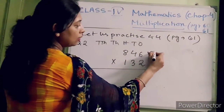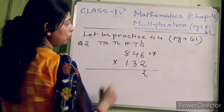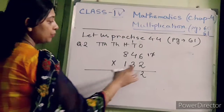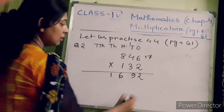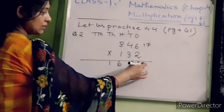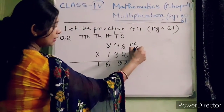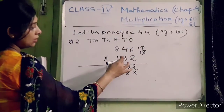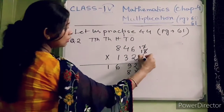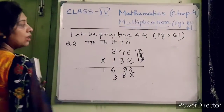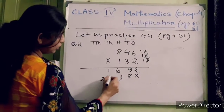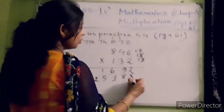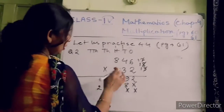Two into six is twelve — cut two and write here, put one on the tens place. Two into four is eight, eight plus one is nine. Two into eight is sixteen. Put a cross on ones. Now multiply this number with three. Three into six is eighteen — cut eight and write here, one on the tens place. Three into four is twelve, twelve plus one is thirteen — write three and one on the hundreds place. Three into eight is twenty-four, twenty-four plus one is twenty-five. Now put a cross on the ones and tens place.